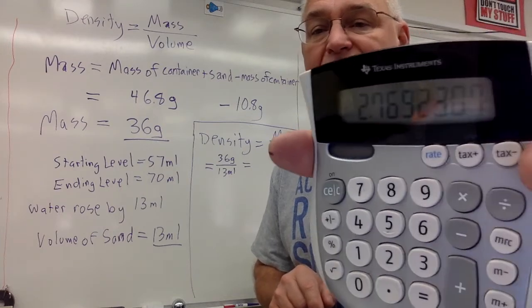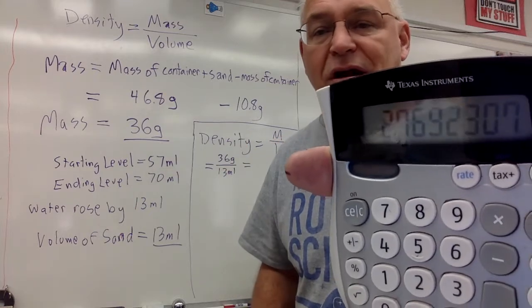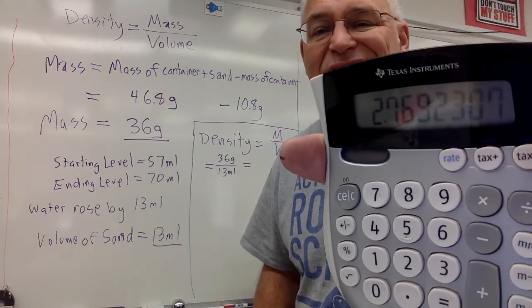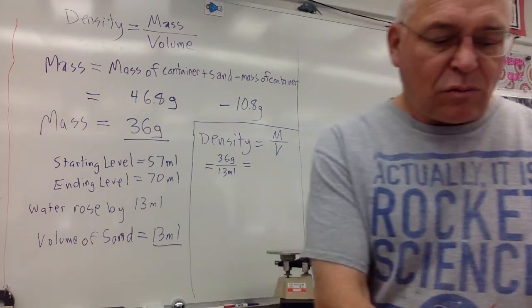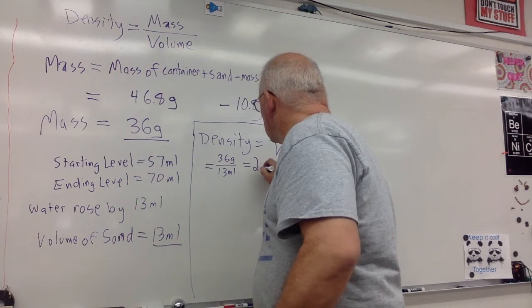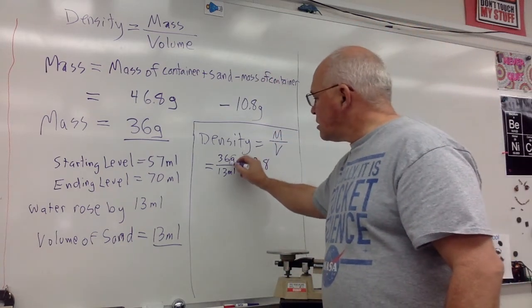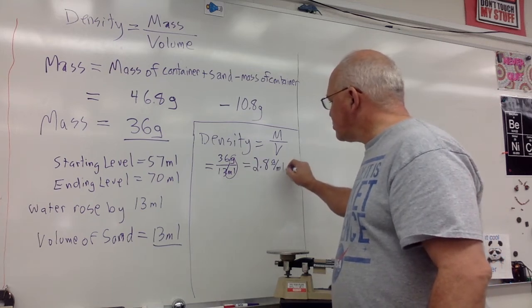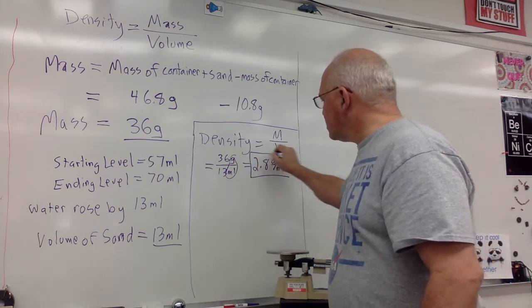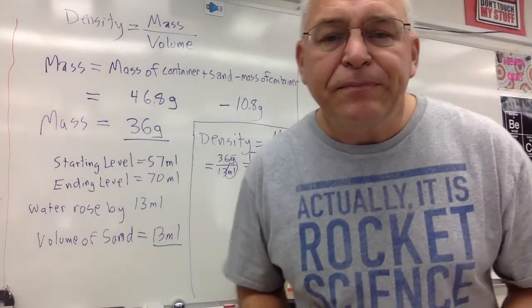2.769230... But do I care about all those decimal places? No, I only care about the first two. The 6 there tells me that the 7 is going to go up to an 8. So rounding to tenths, we get 2.8. There are the units right there. 2.8 grams per milliliter. Don't forget the units. Please put a box around your answer when you do it.